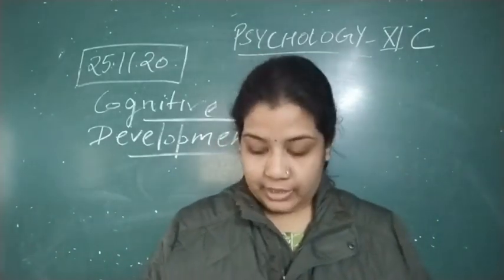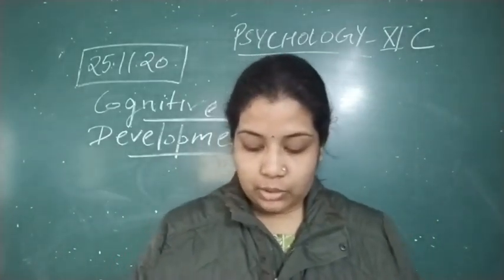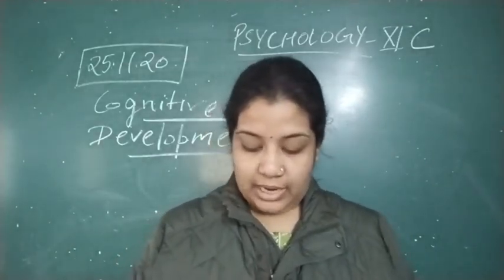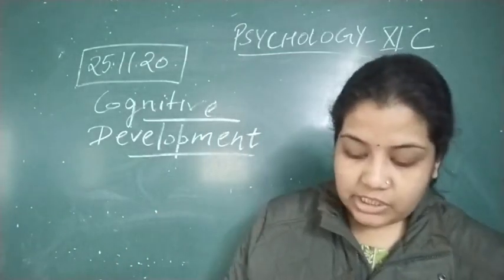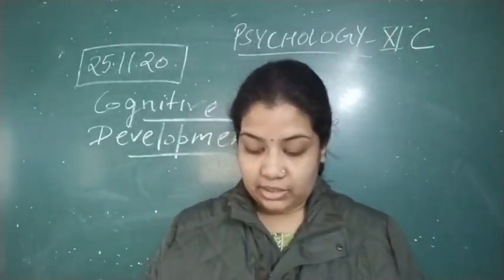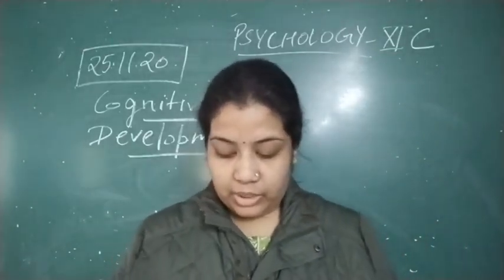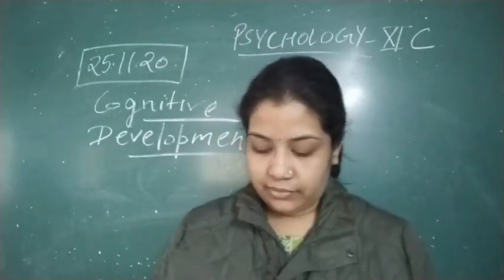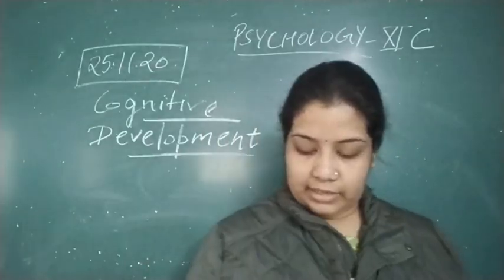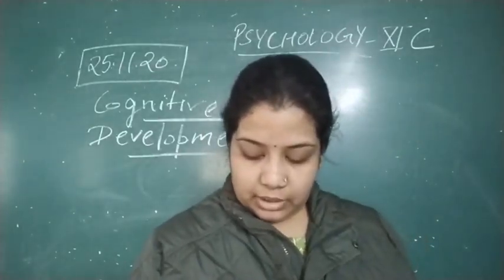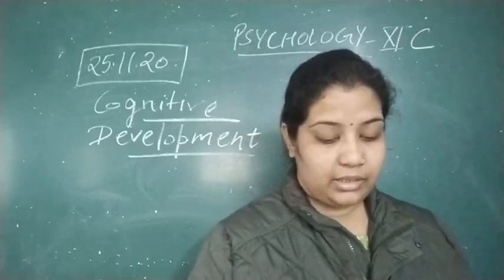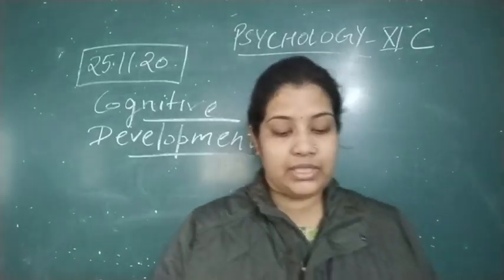During this stage, adolescent thinking expands beyond actual concrete experiences and they begin to think more in abstract terms and reason about them. In addition to being abstract, adolescent thought is also idealistic. Adolescents begin to think about ideal characteristics for themselves and others and compare themselves and others with those ideal standards. For example, they may think about what an ideal parent looks like and compare the parent with these ideal standards.